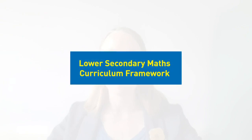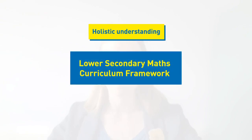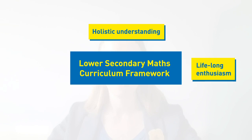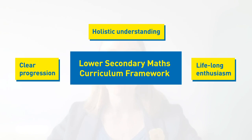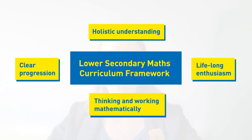The Cambridge Lower Secondary Maths framework encourages learners to develop a holistic understanding of the subject and a lifelong enthusiasm for analytical and rational thinking. It supports a clear progression of mathematics knowledge and skills from primary through lower secondary and beyond, within and across the stages. It aims to produce learners who are skilled in thinking and working mathematically. The accompanying Collins course is carefully designed with all these aims in mind, and together with our primary maths, IGCSE maths, and international A-level maths and further maths courses, our resources support learners all the way through their mathematical journey on the Cambridge pathway.